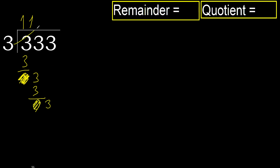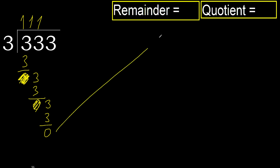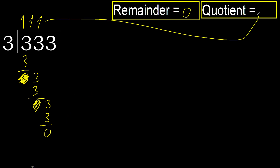3. 3 multiplied by 1 is 3 — 3 is not greater, ok. Subtract.